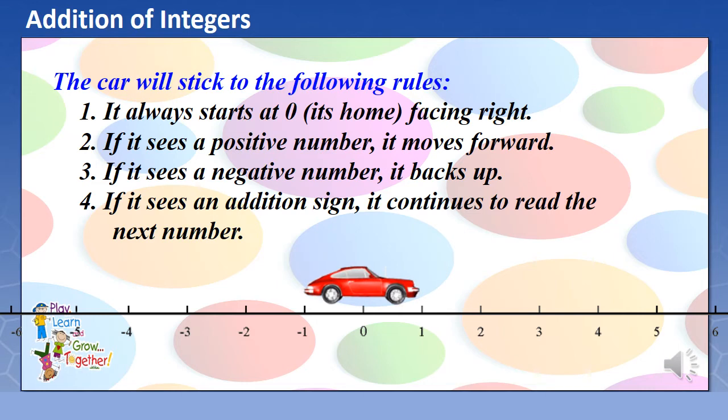2. If it sees a positive number, it moves forward. If it sees a negative number, it backs up. And if it sees an addition sign, it continues to read the next number.